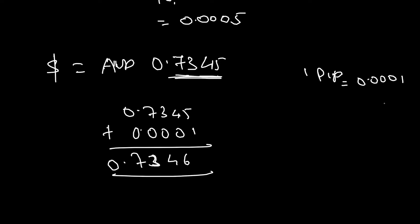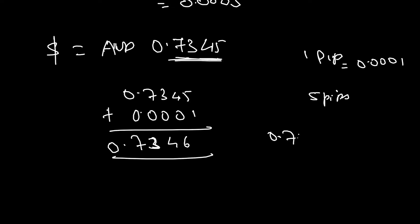If this would have been something like 5 PIPs, then it will be 0.7345 plus 0.0005. So, yeah, 0.7350 then.